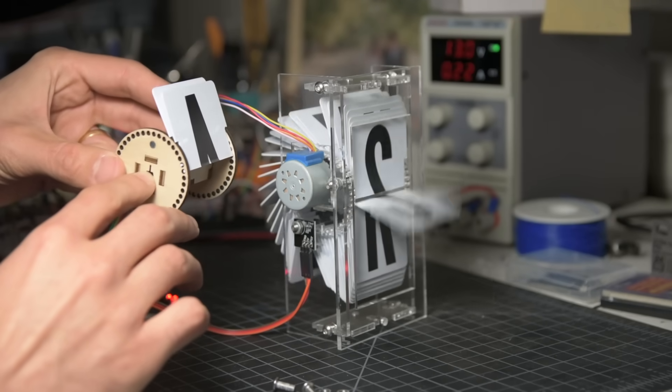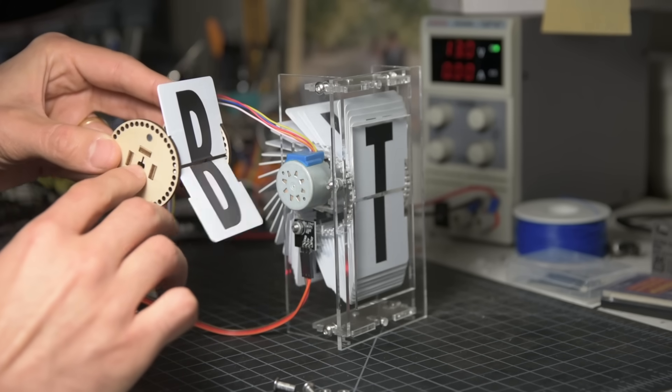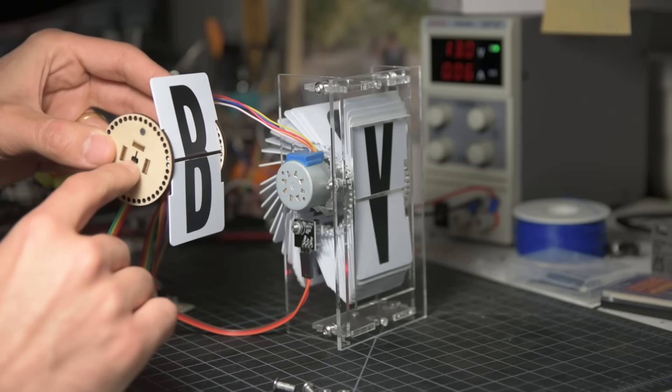each flap comes to the front, and once it gets past vertical, gravity pulls it down, revealing the next letter.